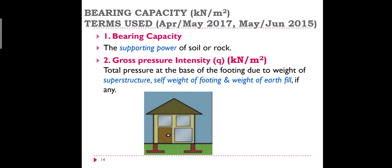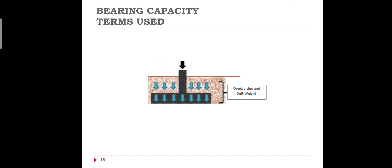When we subtract the weight of the earth fill, which is known as surcharge, we get the net pressure. I hope you have understood these two concepts: gross pressure intensity and surcharge or overburden pressure or the weight of the earth fill. It is represented as γD.